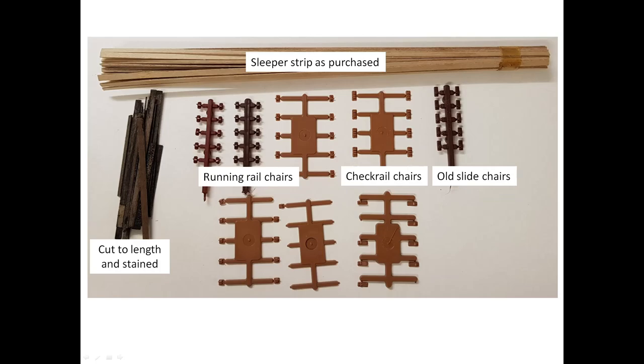There's an allowance for a flare at each end of the check rail because the chairs at each end of the sprue produce a slightly wider gap between stock and check rail. Brittleness isn't a problem for these old slide chairs because they're never under any stress once installed.